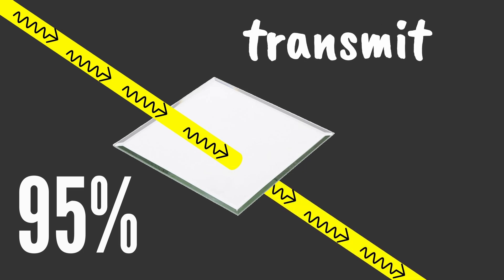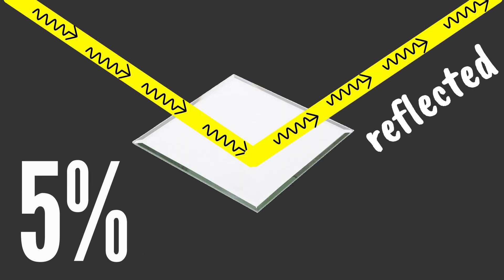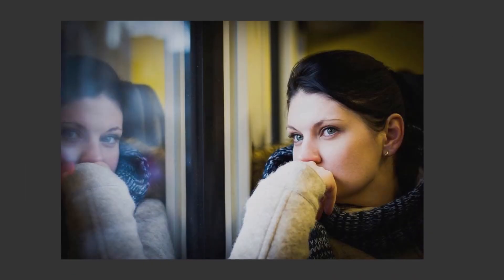In glass, roughly 95% of visible light photons transmit through the glass, but 5% are still reflected. This is why you can sometimes see your reflection in a window.